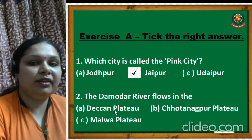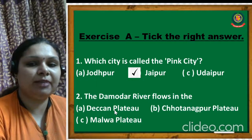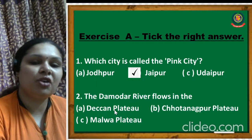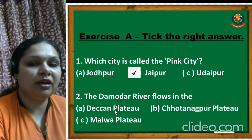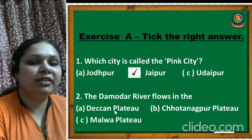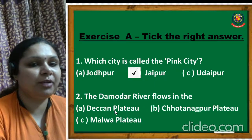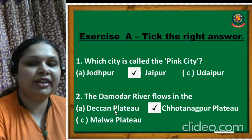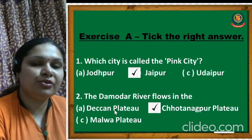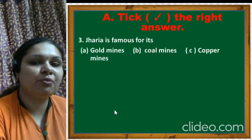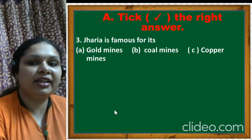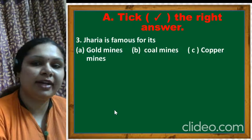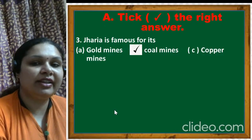The Damodar river flows in - the Deccan plateau, Chhota Nagpur plateau, or Malwa plateau? The correct answer is the Chhota Nagpur plateau. Jhariya is famous for its gold mines, coal mines, or copper mines? The answer is coal mines.